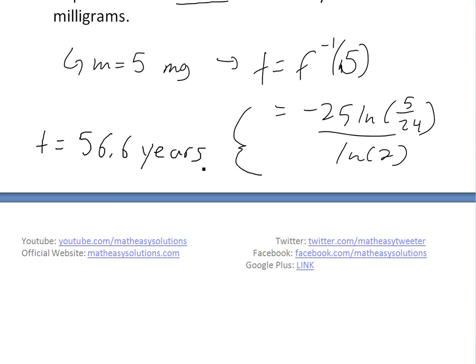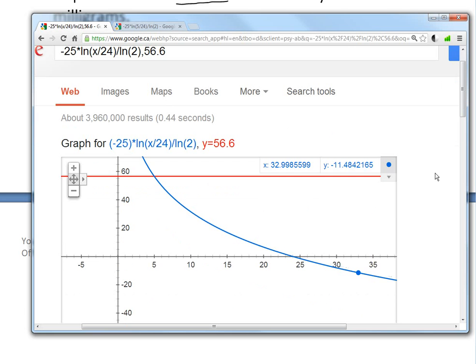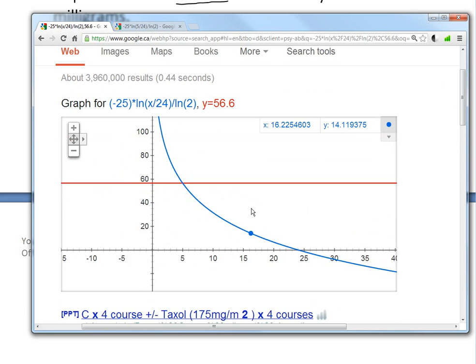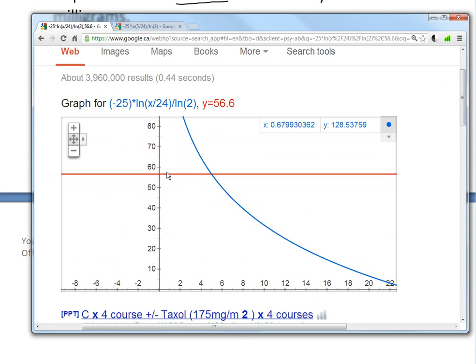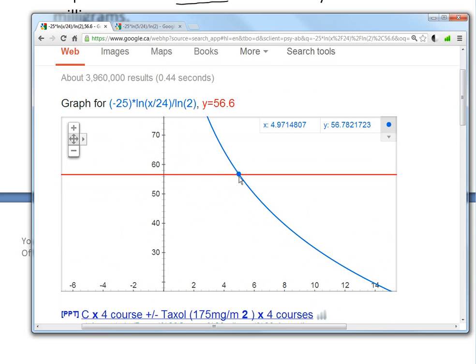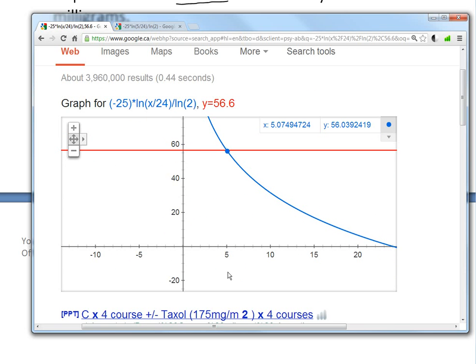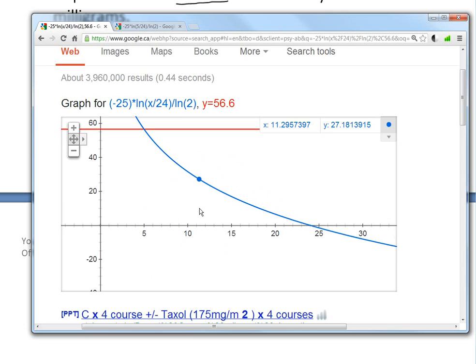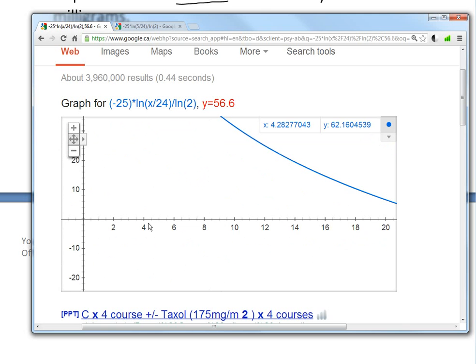Now if we graph this inverse equation, -25 times ln(x/24) divided by ln(2), and also graph the horizontal line at y=56.6 in Google calculator, we get this function. It only makes sense until it gets negative, because you can't get negative time. Remember the vertical axis is time. At 56.6 years, it hits where x equals 5 milligrams. If you want to see when the entire thing decays, that's 24 milligrams up here at zero time.